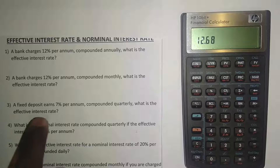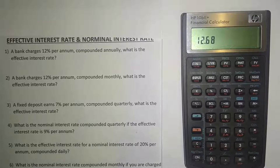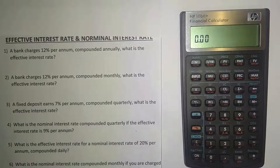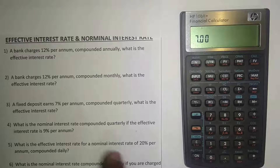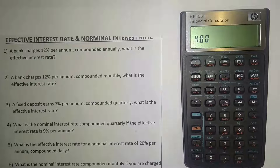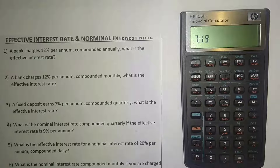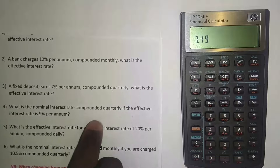Example three: a deposit earns 7% per annum compounded quarterly — what is the effective interest rate? Clear the memory. It's a 7% nominal rate, so press 7, the orange button, then I/YR. Then put the number of compoundings per year — it's quarterly so that's 4. Press 4, orange button, then PMT. Then press orange and PV to compute. The effective interest rate is 7.19%.